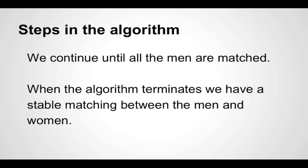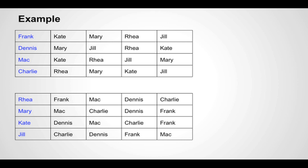Now we've discussed how the algorithm works — let's see an example. Rather than pairing 10 men and 10 women, we will pair four men — Frank, Dennis, Mac, and Charlie — with four women — Rhea, Mary, Kate, and Jill. The tables show the order of preferences of the men and women. For example, Frank prefers Kate the most and Jill the least.